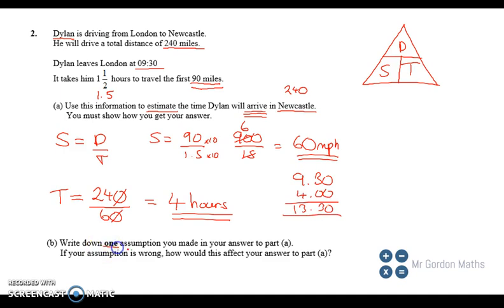Part B, write down one assumption that you've made. So what did we have to assume to work that out? Well, I have to assume that he was driving at a constant speed. And I suppose we've also assumed that he hasn't stopped at all. So no stops along the way. Okay guys, hope that's helpful.